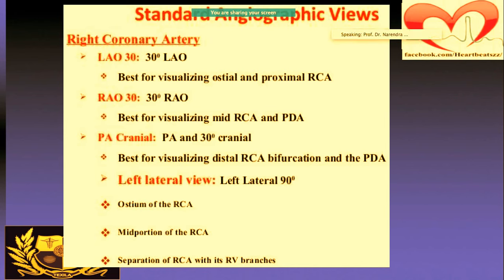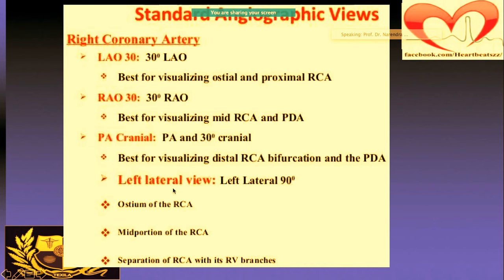Standard angiographic views: for the ostial and proximal RCA, use LAO 30. For the mid-RCA and PDA, use RAO 30. For the PA and 30 cranial view, you can visualize the distal RCA bifurcation and PDA. With the left lateral 90-degree view, you can visualize the ostium of the RCA, mid portion of the RCA, and the RCA with its right ventricular branches. Always remember which view to use for which segment.